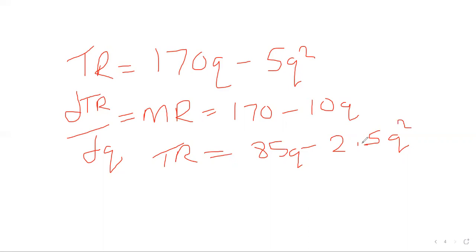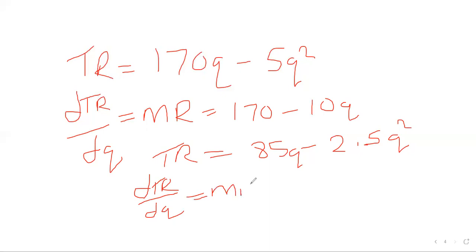So we'll have dTR/dQ, which will equal the marginal revenue. The TR on the left changes its name over Q. Since this is total revenue, the name changes to marginal revenue. Then, since 85Q is to the power 1, we'll have 85. So which is equal to 85.